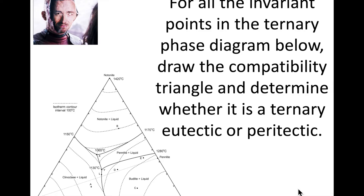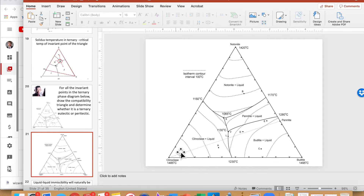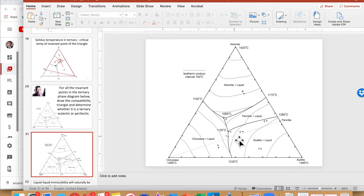We're back. First, let's identify the invariant points. There are two places where three boundary curves meet: point X and point Y. Those are the only two invariant points on this diagram.